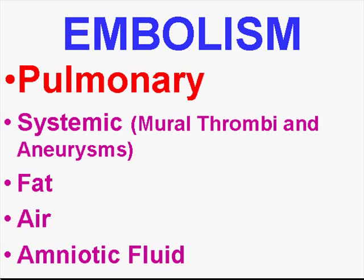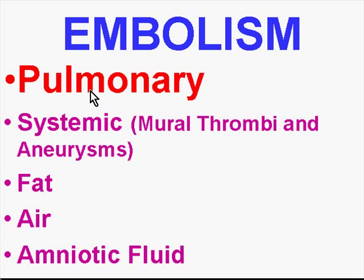Let's talk about embolism. Embolism usually implies a venous embolism to the lungs, but theoretically emboli or thromboemboli could be systemic through the arterial side of the circulation, going away from the heart rather than towards. And they don't have to be blood clots — they could be fat, air, or amniotic fluid.